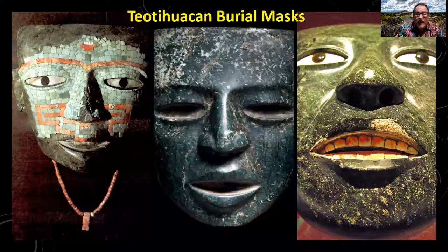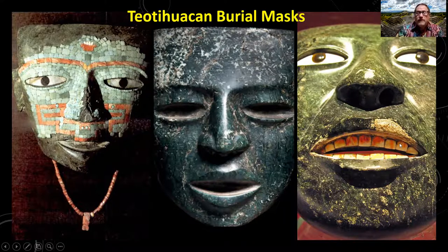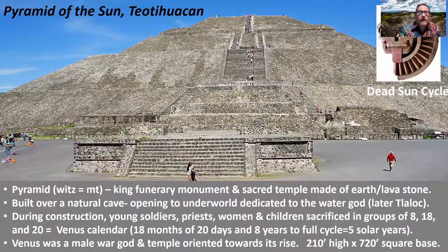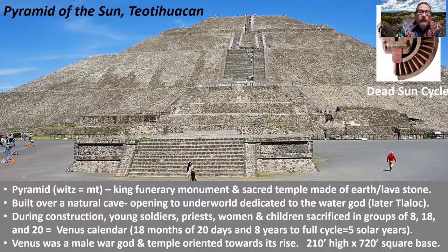They have beautiful burial masks — some constructed of individual pieces, some solid rock carved, largely using obsidian and serpentine, used as death masks similar to how Egypt mummified bodies. The largest pyramid in the New World is the Pyramid of the Sun. The word for pyramid was 'wheat,' which we think translates as 'mountain' — the larger the mountain, the more important the individual. It was a funerary monument and sacred temple made of earth and lava stone, and is half as tall but far wider than the Great Pyramids of Egypt.